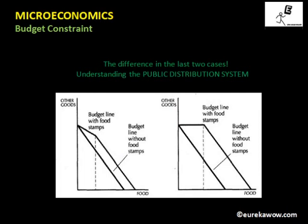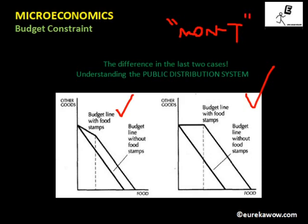Comparing both cases simultaneously: the left shows the Public Distribution System where the first few units of food are provided at subsidized rates and the rest is bought at market price. The right shows the food coupon case where coupons are non-tradable. It is essential to note that food coupons are non-tradable — if they were tradable, consumers could sell them for cash, making it equivalent to a cash subsidy.